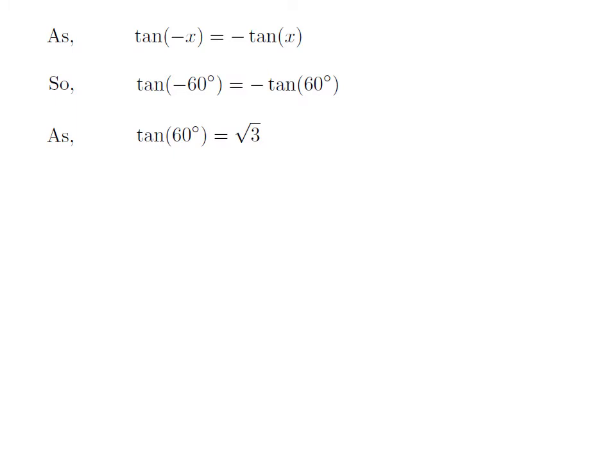We know the value of tangent of 60 degrees is equal to square root of 3. So we get the value of tangent of minus 60 degrees is equal to minus square root of 3.